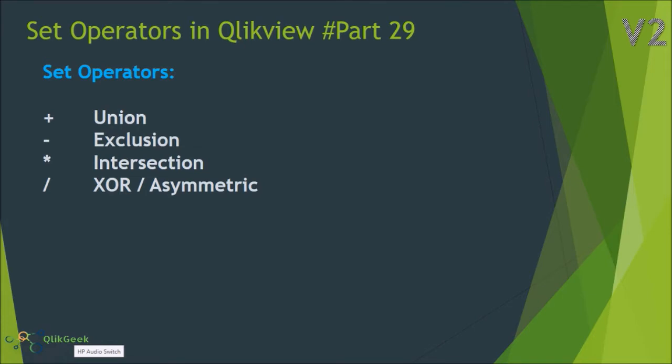There are four set operators available in QlikView: union, exclusion, intersection, and XOR or asymmetric. Union is represented by plus, exclusion by minus, intersection by asterisk, and XOR by slash.